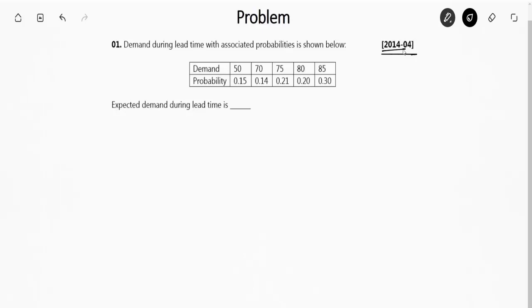The question says demand during lead time with associated probabilities is shown below. They have given the demands and the probability distribution. If you look carefully, the sum of the probability distribution is 1.